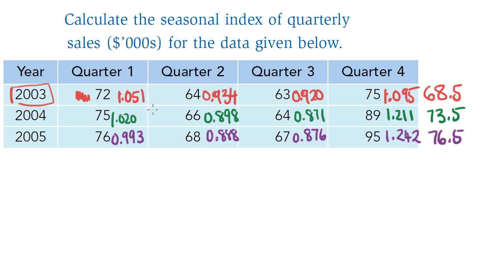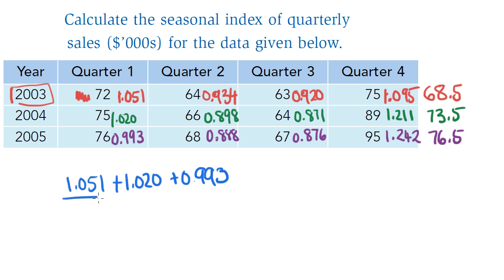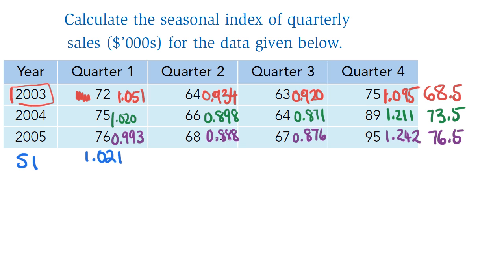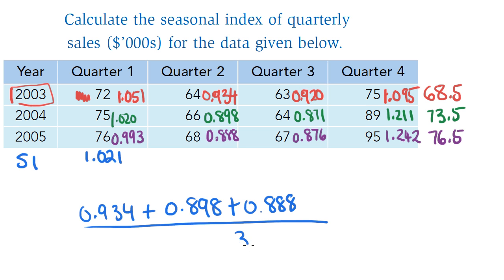To find the seasonal index I average the three yearly proportions. For quarter one: 1.051 plus 1.020 plus 0.93993, divided by 3, gives 1.021 — that is the seasonal index for quarter one. For quarter two: 0.934 plus 0.898 plus 0.888 all divided by 3 gives 0.907.